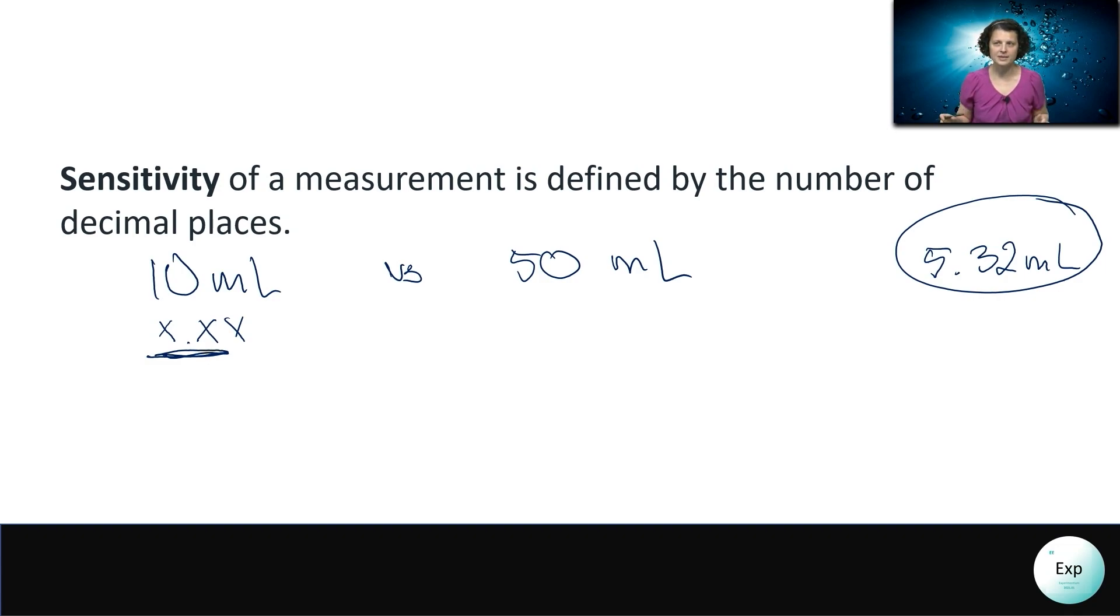However, if we want to measure the same volume in a 50 milliliter graduated cylinder, that only gives us one number after the decimal place. And that number is already going to be our estimate. So our value is only going to be the number before the decimal place. The same approach applies when we try to determine what kind of scale to use.